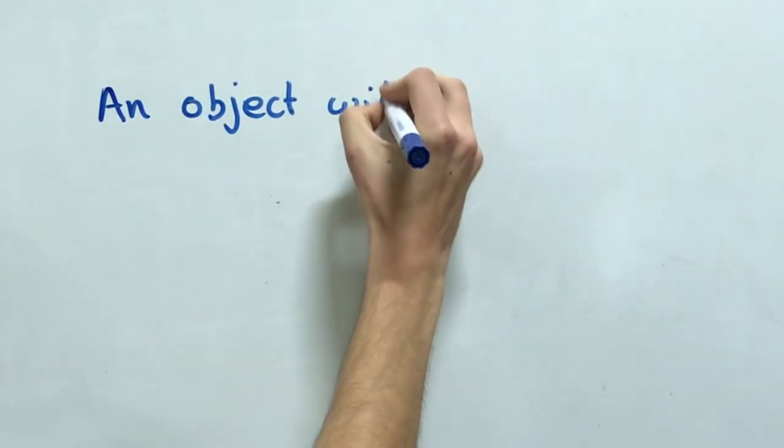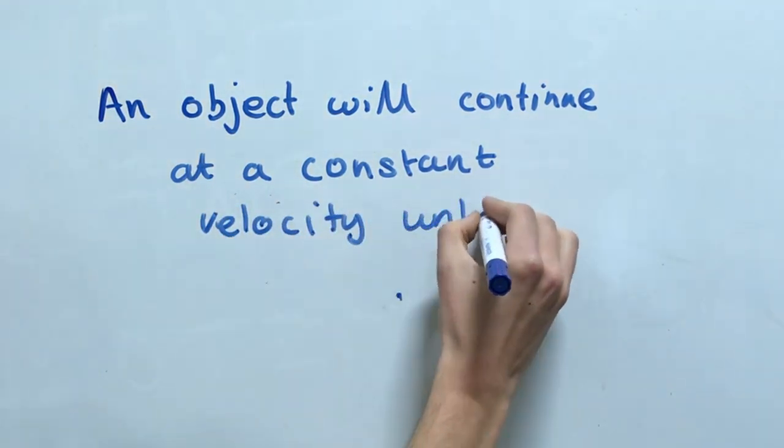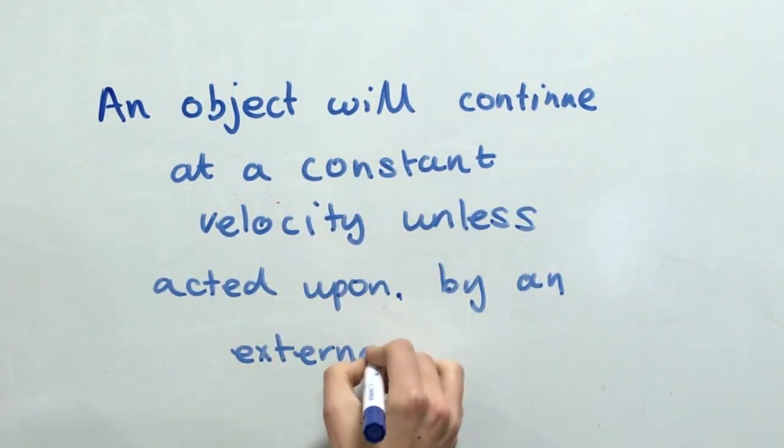The first law states that an object will continue at a constant velocity unless acted upon by an external force.